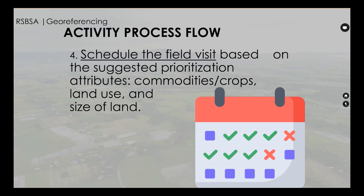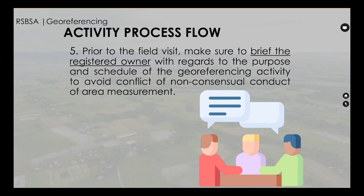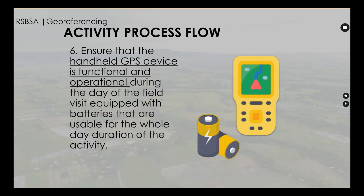Activity process flow number four: schedule the field visit based on the suggested prioritization attributes — commodities/crops, land use, and size of land. Activity process flow number five: prior to the field visit, make sure to brief the registered owner regarding the purpose and schedule of the geo-referencing activity to avoid conflict or non-consensual conduct of area measurement.